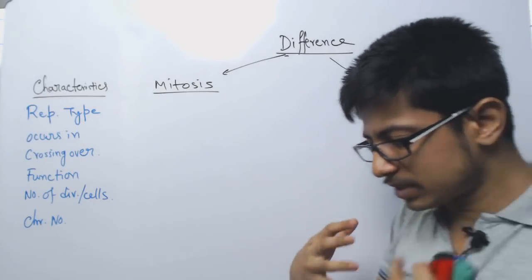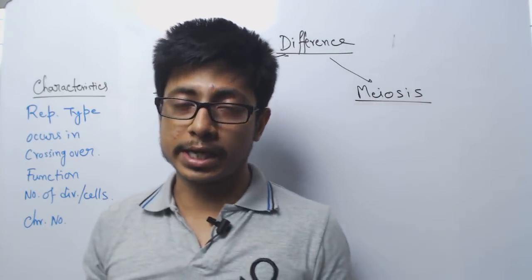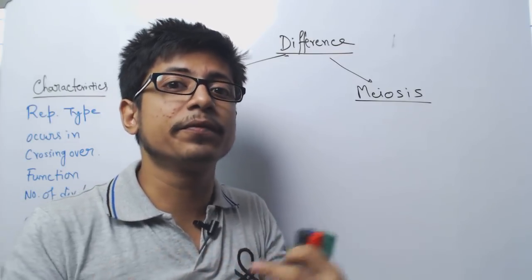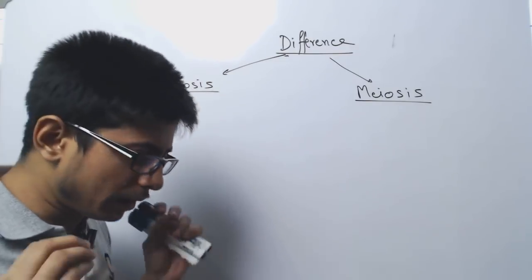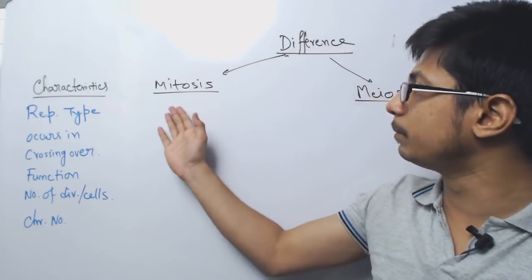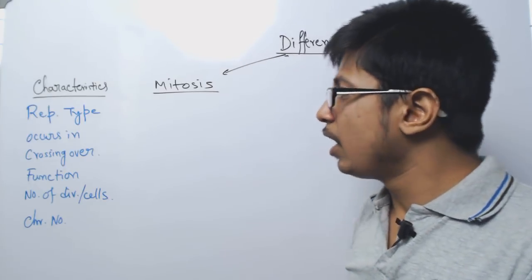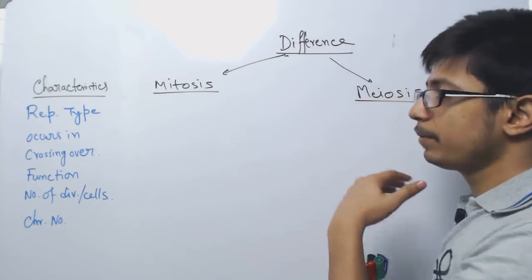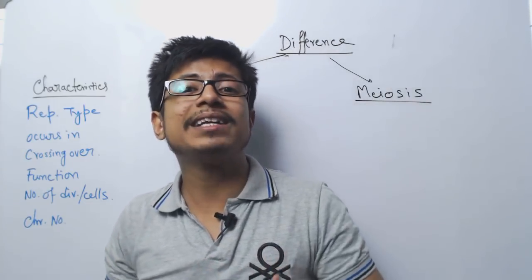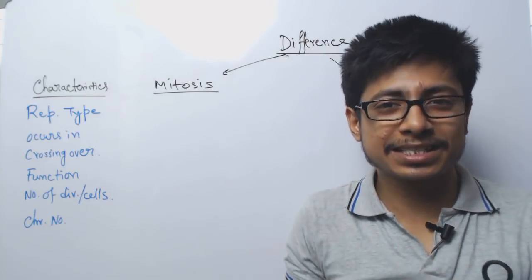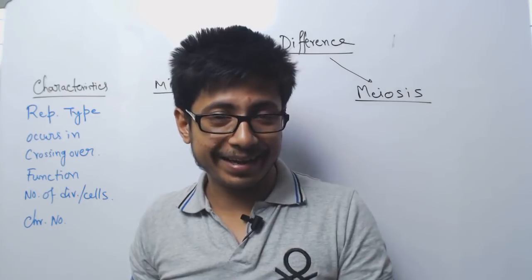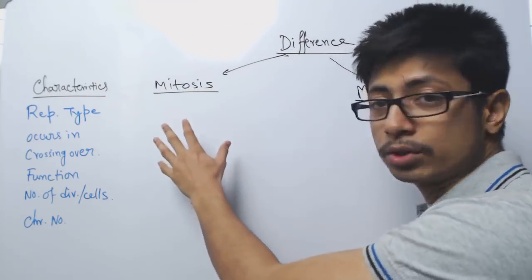While in meiosis, one cell produces four cells, and the cells generated from the mother cell have different features. The major difference, if I want to tell you just one, would be why we require mitosis and why we require meiosis. The idea of mitosis is to generate new body cells — from one body cell we produce the next — so that our tissues start forming, our organs start building up, and our body starts forming. That is the idea of mitosis.